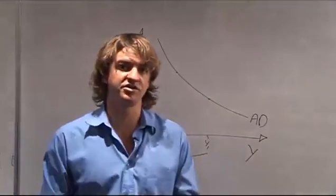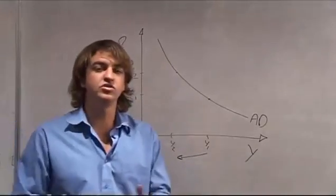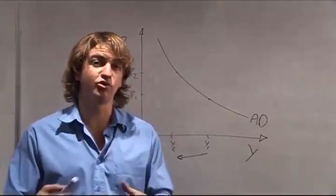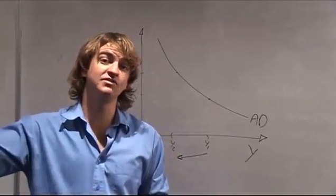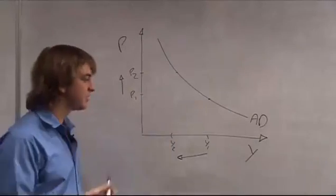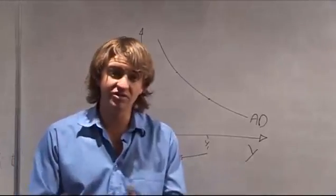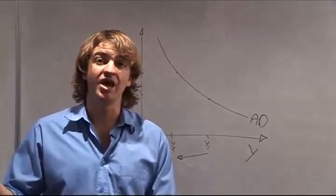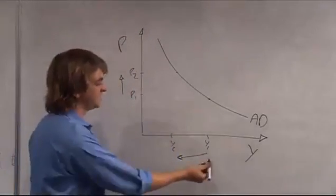The last effect is the foreign purchases effect. If the price of home goods increases from P1 to P2, consumers will buy more imports. Also, if prices increase, other countries will buy less of your exports. Your net exports factor decreases, and as we saw from the aggregate expenditures model, when net exports decrease, GDP decreases. So with an increase in price, people buy more imports and foreigners buy fewer of your exports, reducing output.